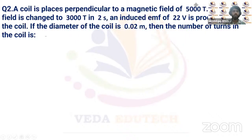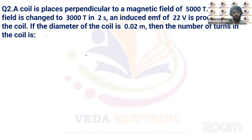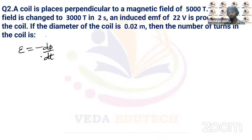Question number two: a coil is placed perpendicular to a magnetic field of 5000 tesla. When the field changes to 3000 tesla in 2 seconds, an induced EMF of 22 volt is produced. If the diameter of the coil is 0.02 meter, find the number of turns. Induced EMF equals minus dΦ/dt — the rate of change of flux — and the negative sign gives the direction.